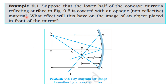From NCERT textbook, from the topic Ray Optics and Optical Instruments, example 9.1. Suppose that the lower half of the concave mirror's reflecting surface in figure 9.5 is covered with an opaque non-reflective material. What effect will this have on the image of an object placed in front of the mirror?